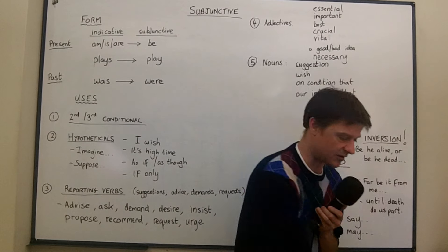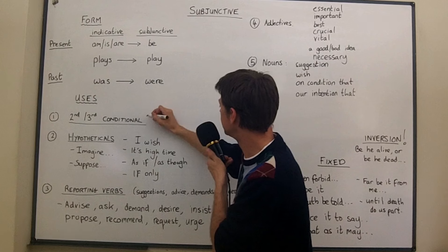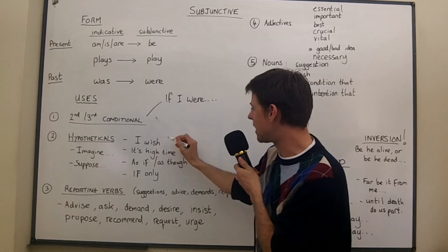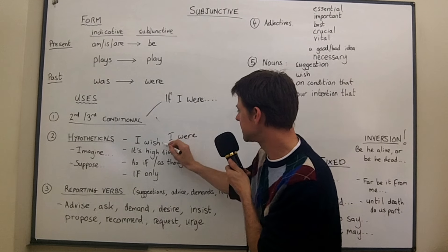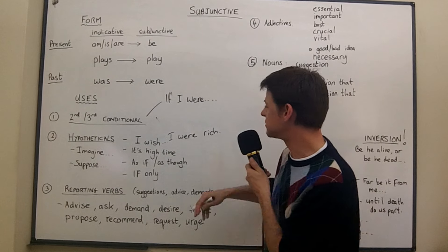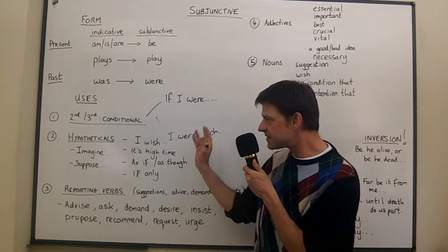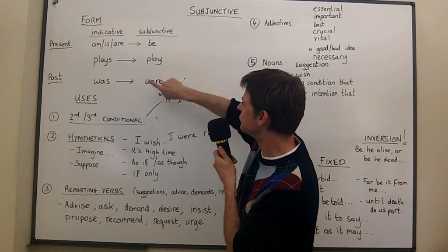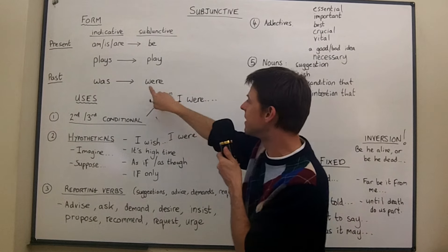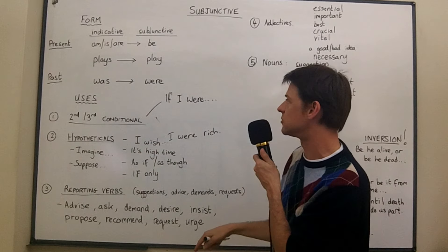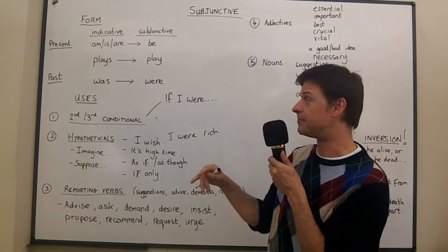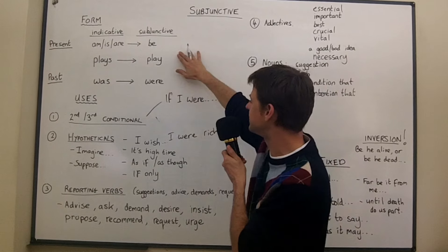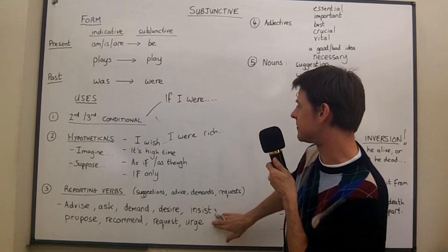We use the subjunctive in second and third conditional — the most obvious example being 'if I were.' We also say 'I wish I were rich,' which sounds more formal than 'I wish I was rich,' though that would still be okay. People are quite often familiar with the past subjunctive form from conditionals, but may not have seen the present forms, which I can show you with the reporting verbs.